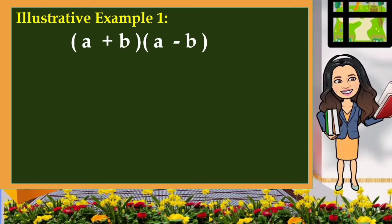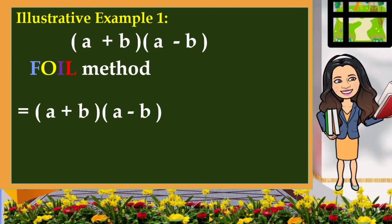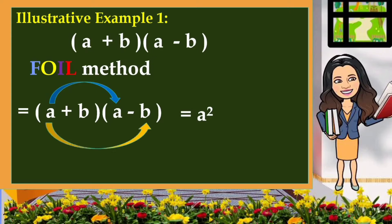One of the methods is the so-called FOIL method. That is, we are going to find the product of their first terms, outer terms, inner terms, and last terms. Now let's give its product. A multiplied by A is equal to A squared. A times negative B, that's negative AB. B times A, that is AB.